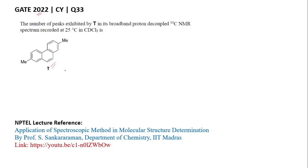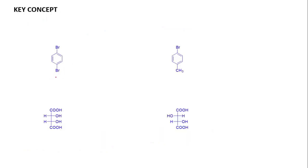Before moving to the solution, let's look at the basic concept behind this question. To determine the number of peaks for any compound in 13C NMR spectrum, first we have to determine the number of distinguished carbon atoms present in the compound. To do that, we have to look at the molecule and see whether it contains any symmetry elements or not.